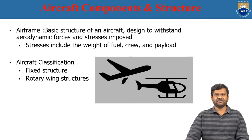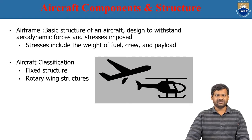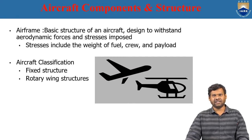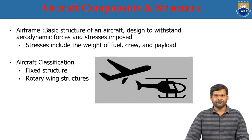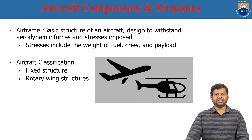Coming to the classification of aircraft, we have two types: one is a rotary wing structure and one is a fixed wing structure. In the fixed wing structure, the wing of an aircraft is the main source of lift, and in the rotary type of aircraft, the rotor is the main source of lift. This is the reason why we have classified them into these two categories.